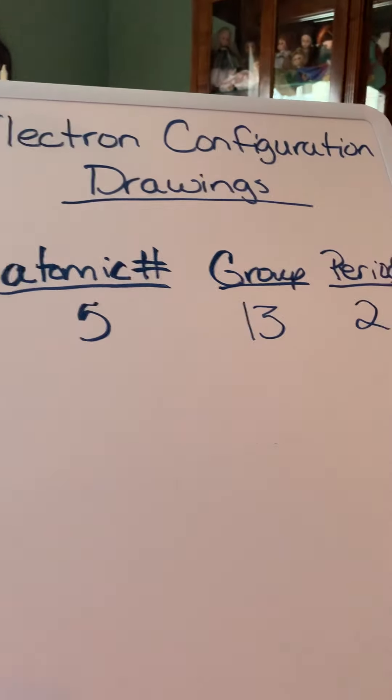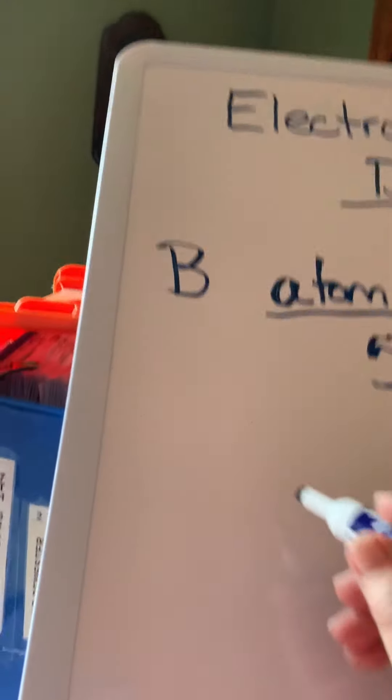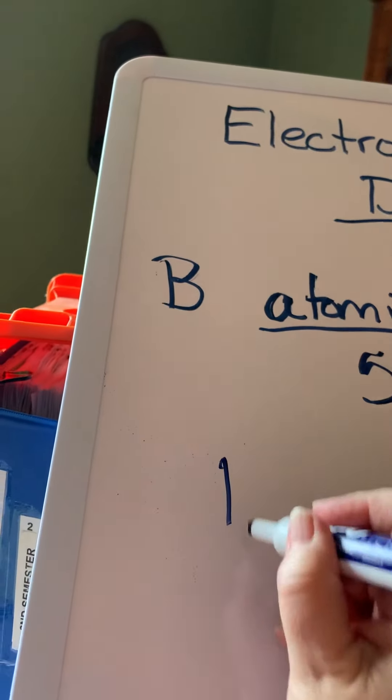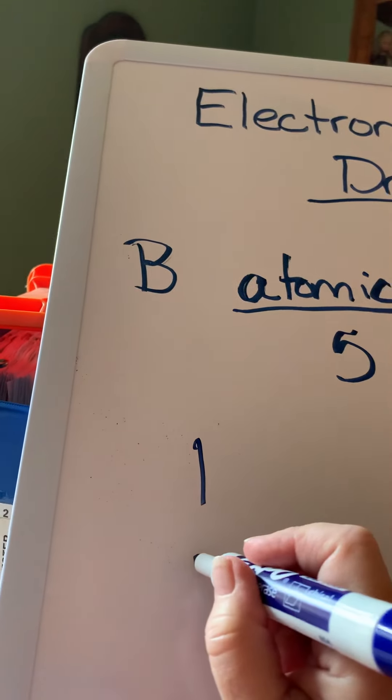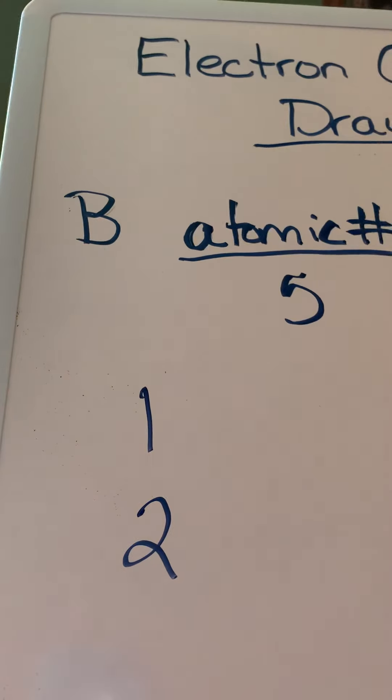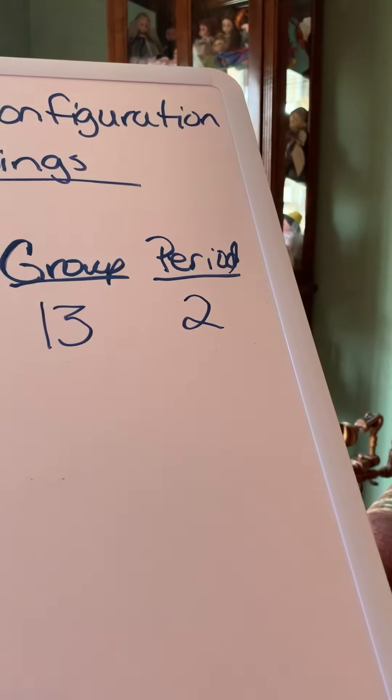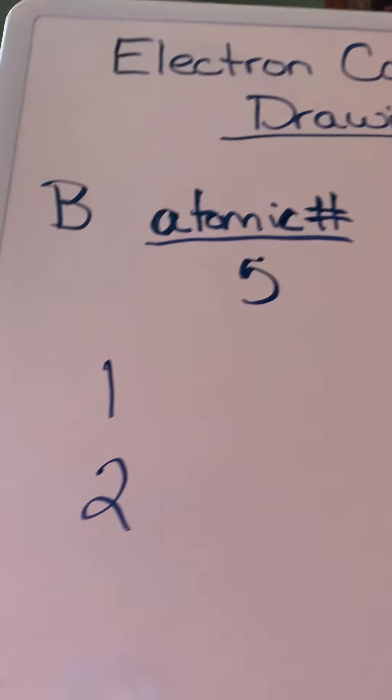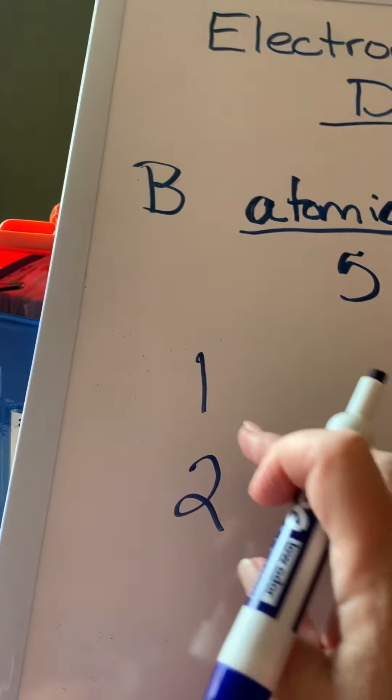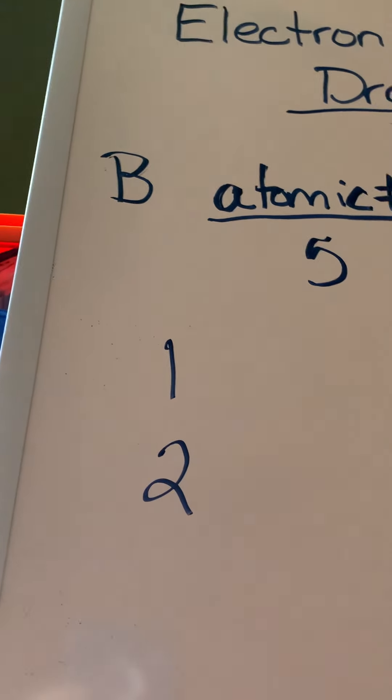All right, so here's where we have to remember the letters. You're going to have level one and you're going to have level two. And that's all you're going to have. Why? Because it's in period two, so you're going to have two levels. So you just write one, two, one right after under the other one.